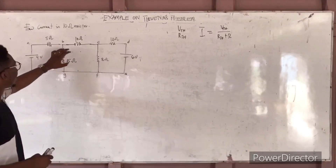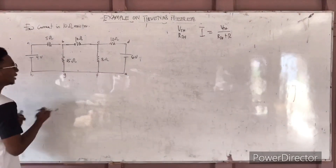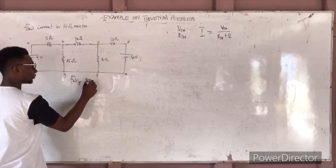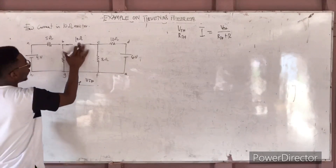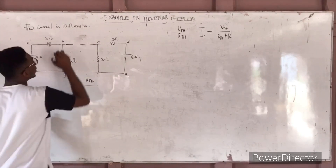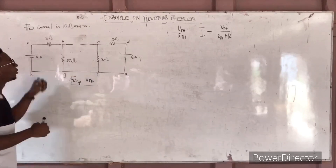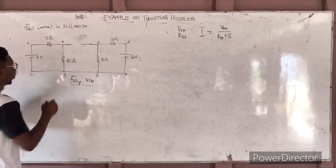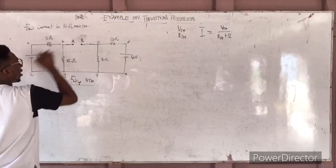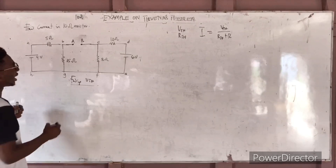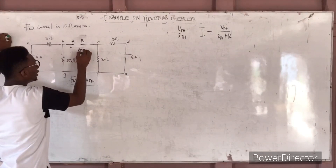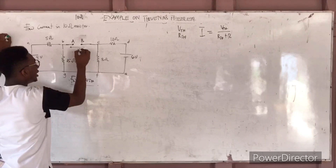The current through the particular resistor is VTH divided by RTH plus the load resistor. So now, to find the VTH, the first step says that you have to open-circuit that particular resistor — so let's take the 10-ohm resistor here. You have to open-circuit that load, and let's name our terminal. After naming our terminal, we have to introduce the terminal voltage, which is VTH, in this direction.